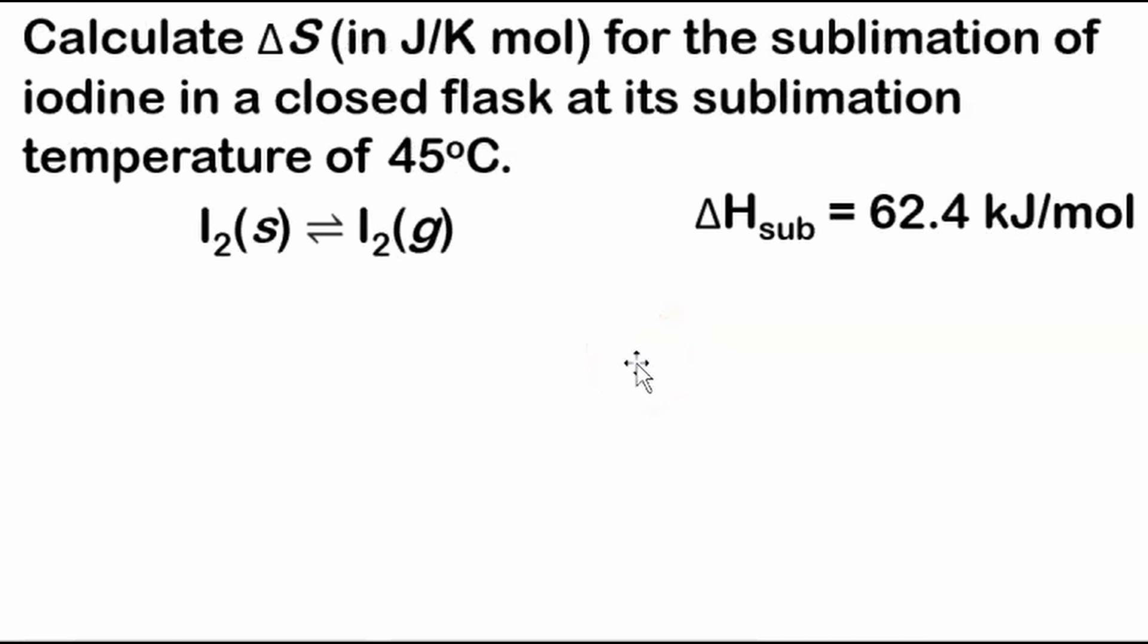So this is our first exam problem here, calculate the change in entropy in joules per Kelvin mole for the sublimation of iodine in a closed flask at its sublimation temperature of 45 degrees Celsius. And here we have iodine in equilibrium, it's solid and a gas because it's sublimating, so going from a solid to a gas. And there we have the change in enthalpy of sublimation of 62.4 kilojoules per mole.